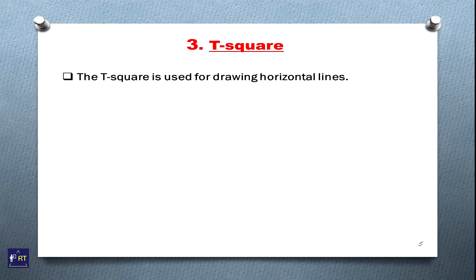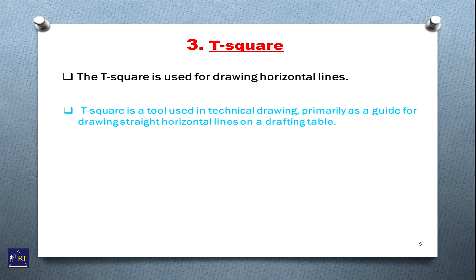Number 3. T-square. The T-square is used for drawing horizontal lines. T-square is a tool used in technical drawing, primarily as a guide for drawing straight horizontal lines on a drafting table. This is the image of T-square.